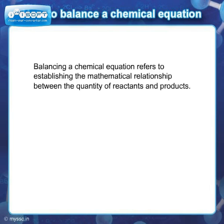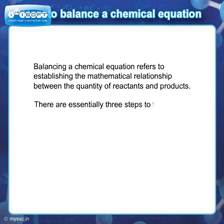Balancing a chemical equation refers to establishing the mathematical relationship between the quantity of reactants and products. There are essentially three steps to the process.